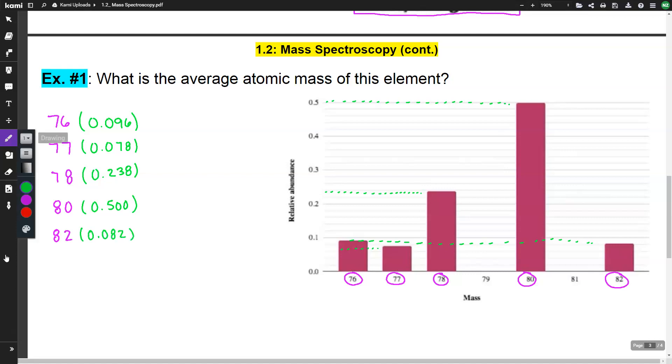So I'm going to multiply all of these individually. So when I do 76 by 0.096, I get 7.32. I'm just going to go ahead and fill these in: 6.01, 18.6, 40.0, and 6.64. So that's the abundance multiplied by the mass. And then I just add these up.